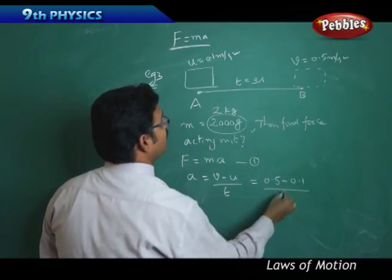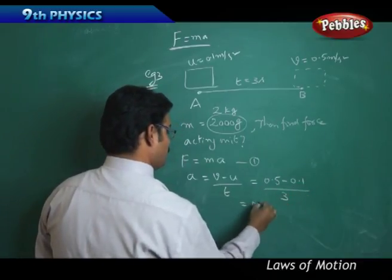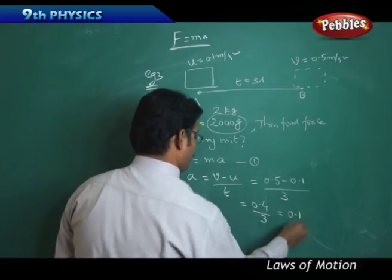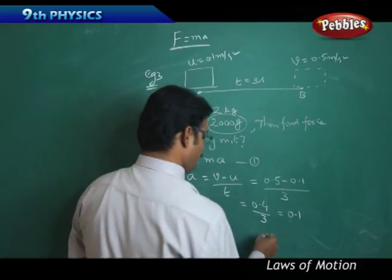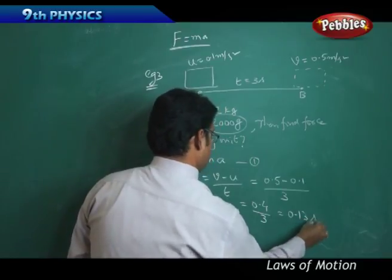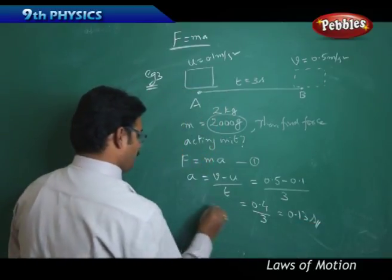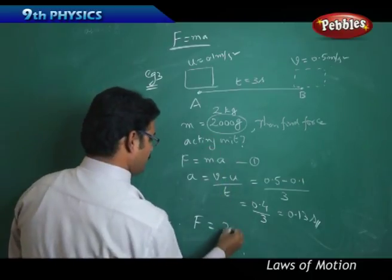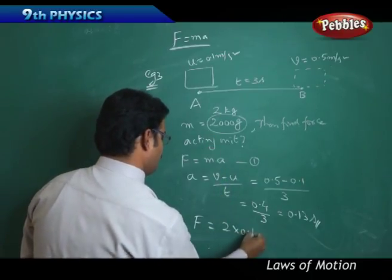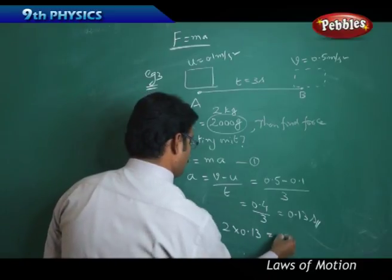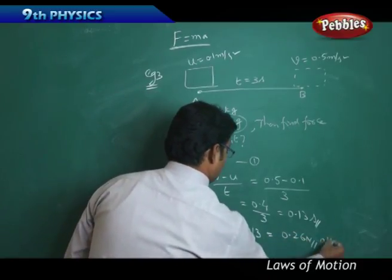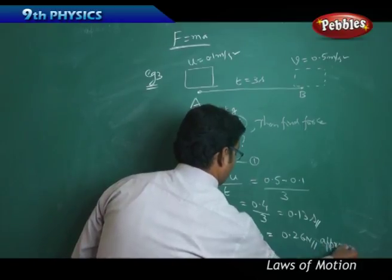So it is 0.4 by 3. Therefore F = mass is 2 kg into 0.13, which is nothing but 0.26 Newton approximately.